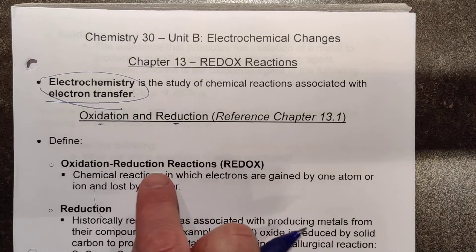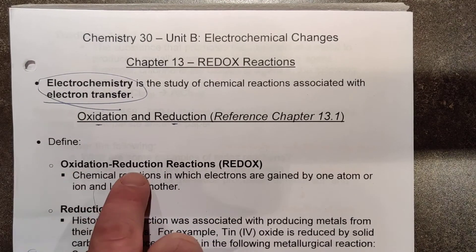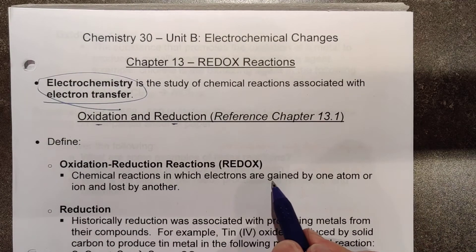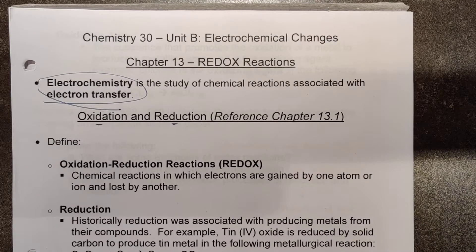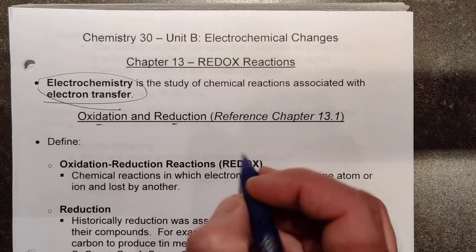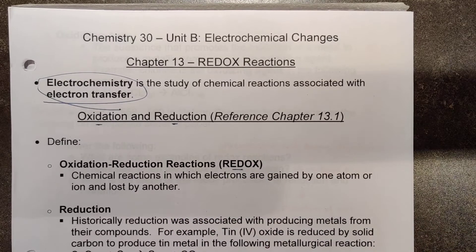Oxidation and reduction must happen together — I cannot have one without the other. If something is going to gain electrons, then something else had to lose them. They are two half-processes or half-reactions that make the overall electrochemical change possible. We simplify this and we call it redox, and we do know that we can't have one without the other.